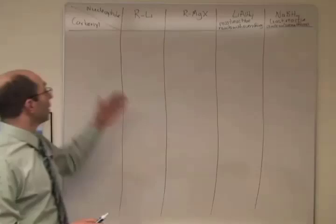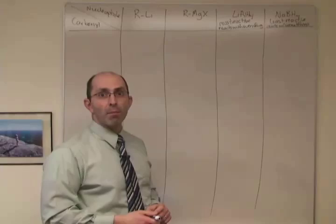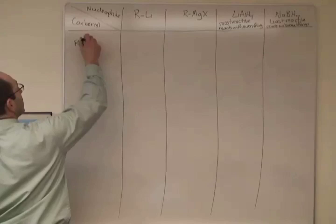Down this side, we have to list what all of our electrophiles are. So these are going to be all of our carbonyl compounds. So let's just start listing out the carbonyl compounds that we know. So acid chloride.